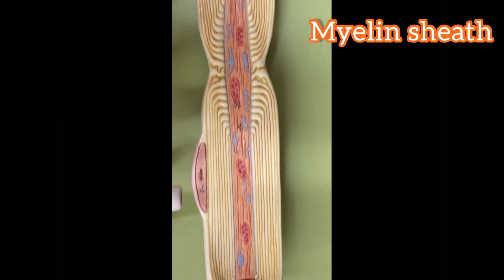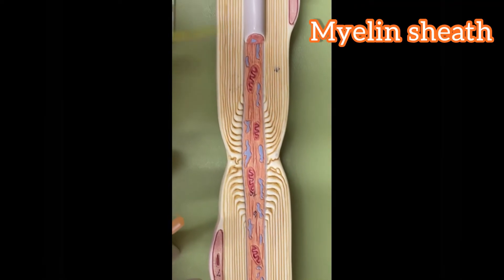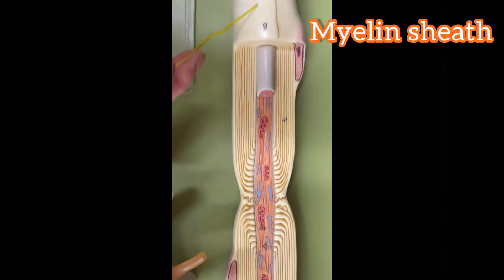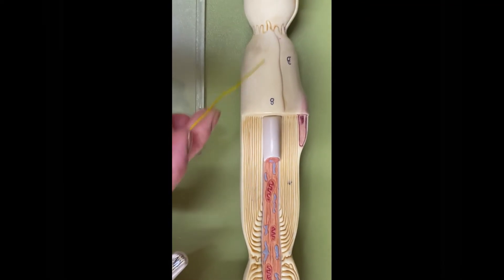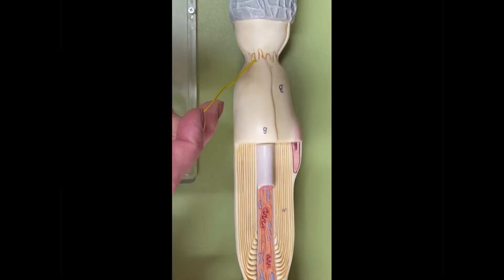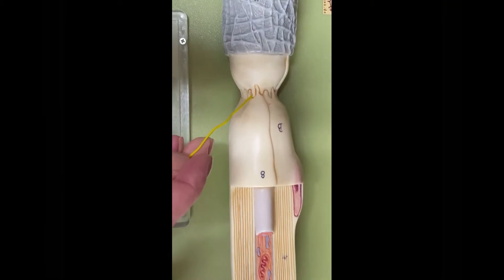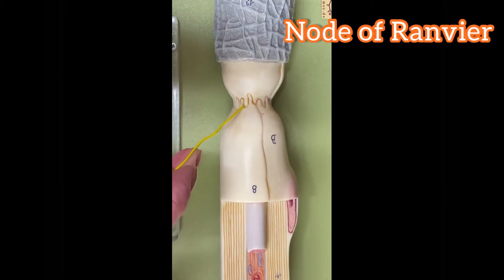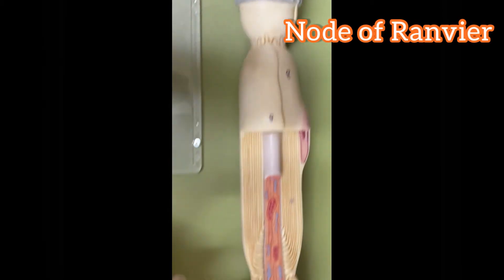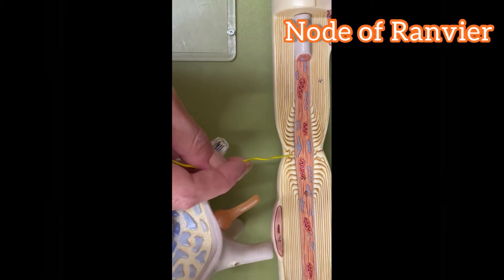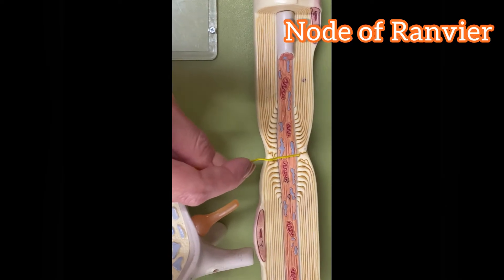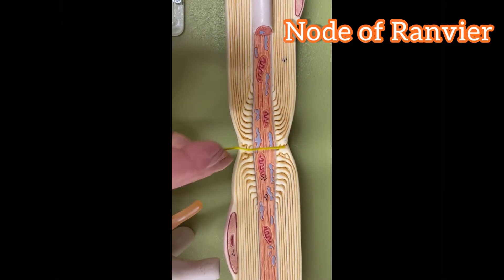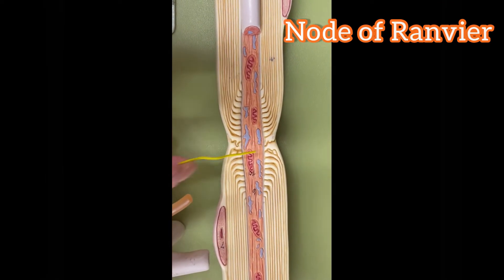So this is all myelin sheath, including here. This part is what we call the node of Ranvier. And when we look at the section part, this is the node of Ranvier.